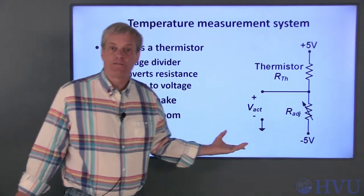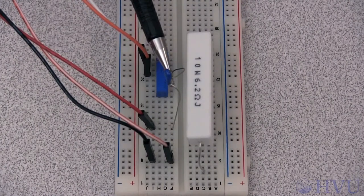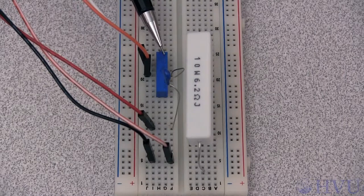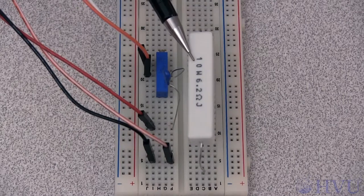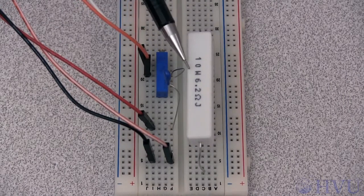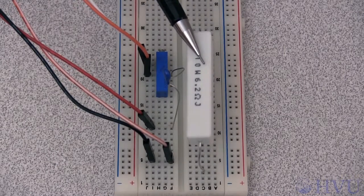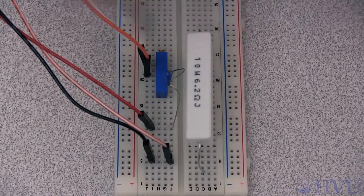Now let's build this part of the circuit and test its operation. This is our thermistor — its resistance decreases as temperature increases. I've put that in series with a potentiometer. The resistance of my thermistor is about 11–12 kΩ at room temperature, so this potentiometer needs to cover a range of resistances that includes that value. I've used a 50 kΩ pot. I want to measure the temperature of this power resistor, so I need to attach the thermistor to the power resistor. I'll just use some tape to attach the thermistor to the resistor.